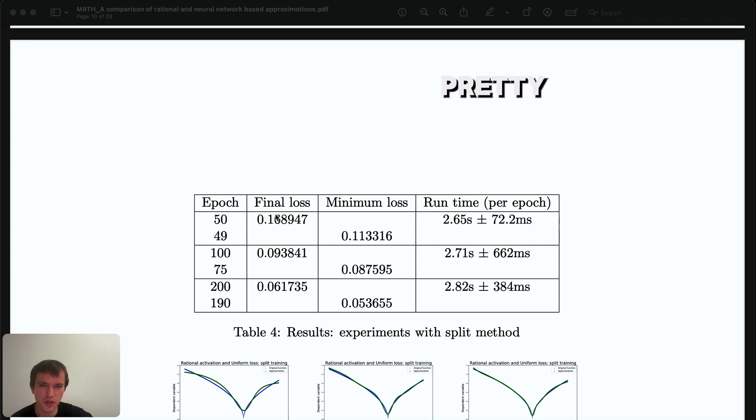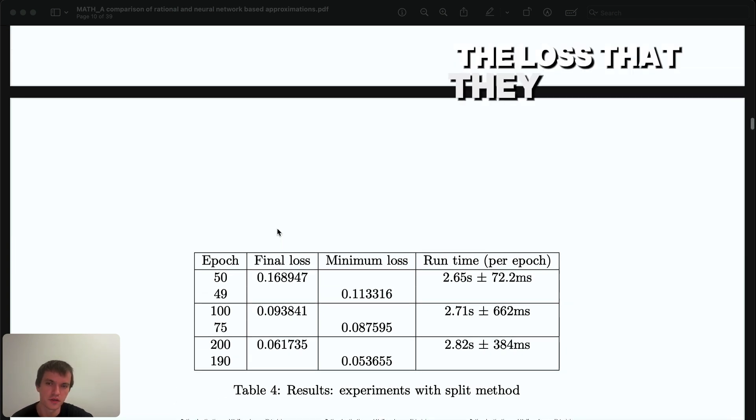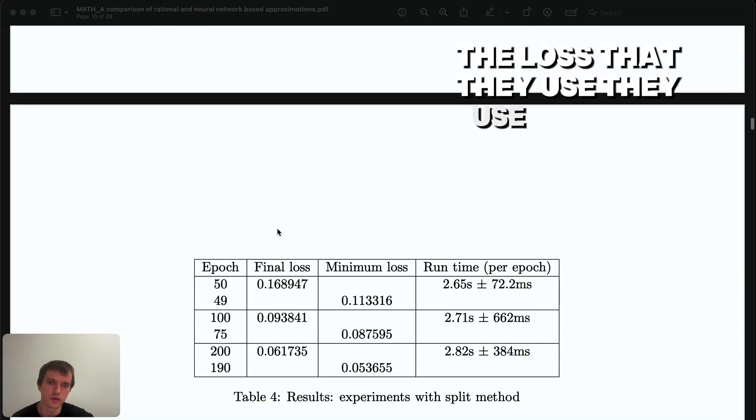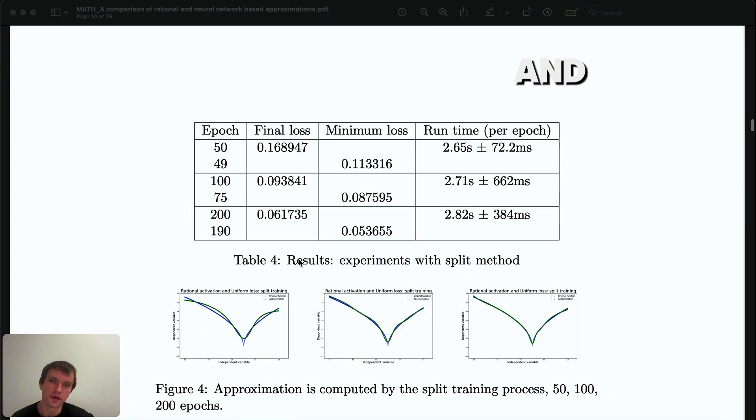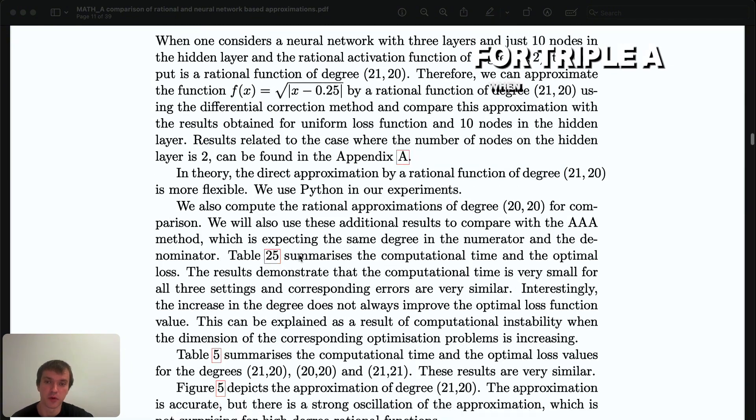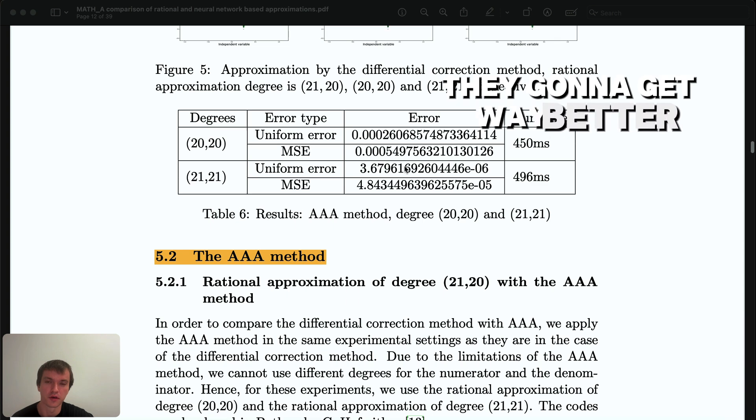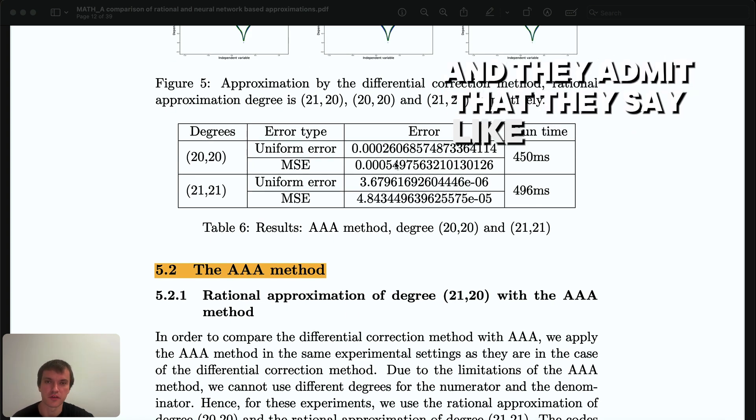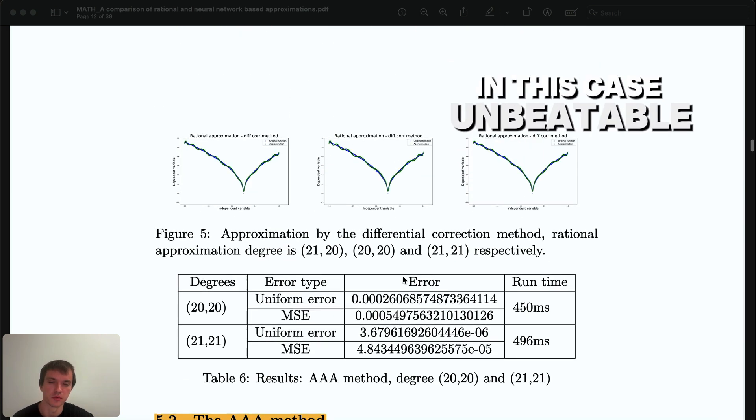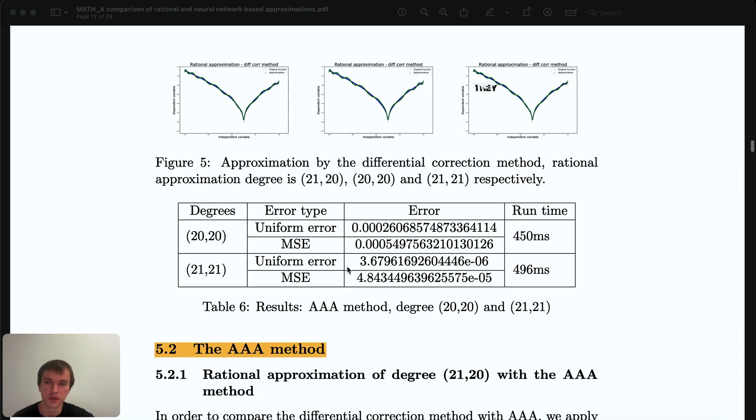In some sense, the loss that they use is uniform mean square. And in comparison, for example, for AAA, when for the smaller amount of time they're going to get way better error. And they admit that—they say like AAA is in this case unbeatable.